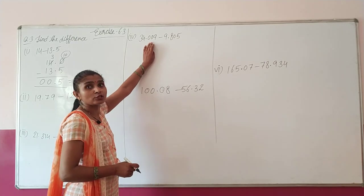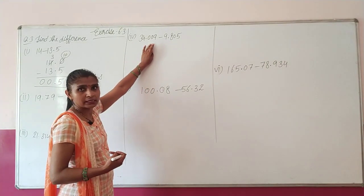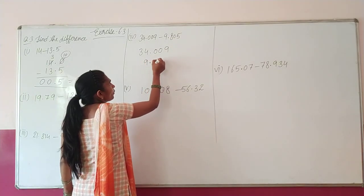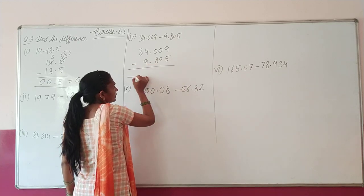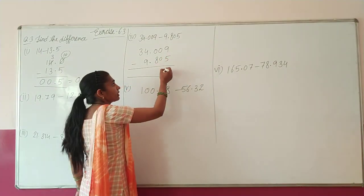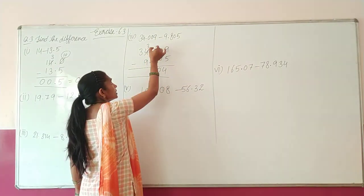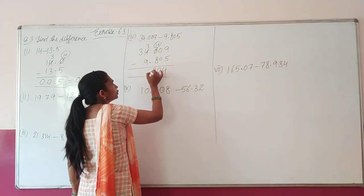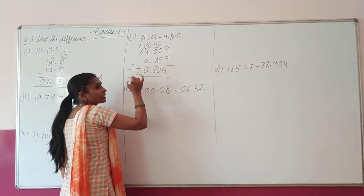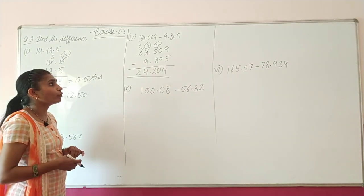Next part: 34.009 minus 9.805. Both have three decimal digits. I will solve this one. 9 minus 5 = 4; 0 minus 0 = 0; 0 minus 8 — not possible, take borrow: 3 becomes 2, 0 becomes 10, 10 minus 8 = 2; now 2 minus 9 — not possible, borrow again: next digit becomes 2, current becomes 13, 13 minus 9 = 4, and next digit 2 remains. So the answer is 24.204.